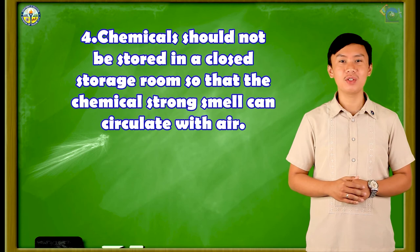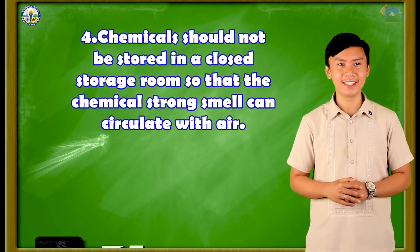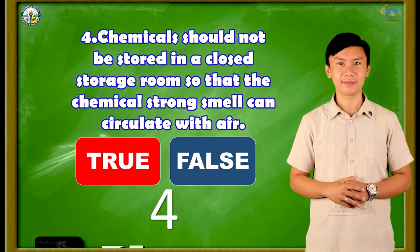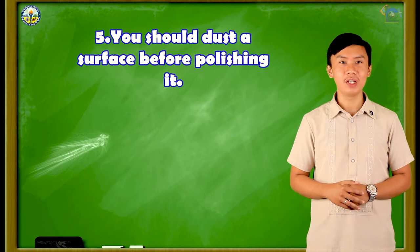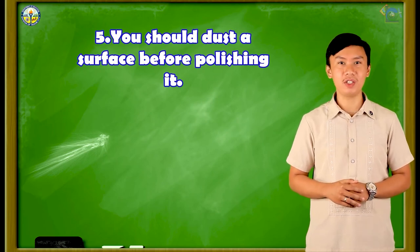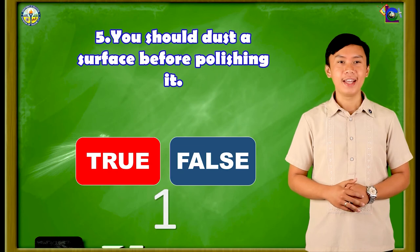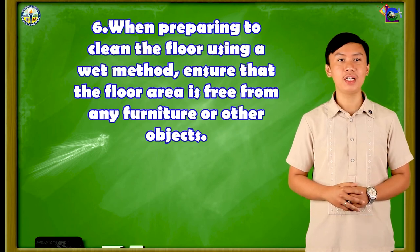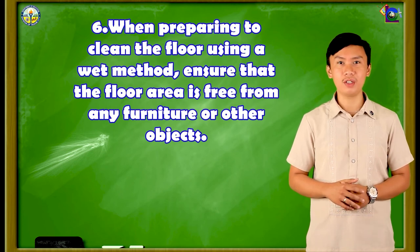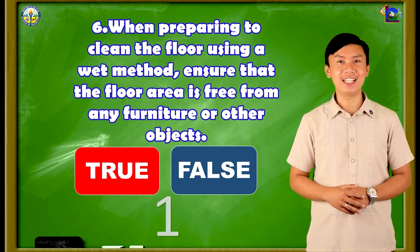Number 4: Chemicals should not be stored in a closed storage room so that the chemical strong smell can circulate with the air. True or false? The correct answer is FALSE. Number 5: You should dust a surface before polishing it. True or false? The correct answer is TRUE. Number 6: When preparing to clean the floor using a wet method, ensure that the floor area is free from any furniture or other objects. True or false? The correct answer is TRUE.